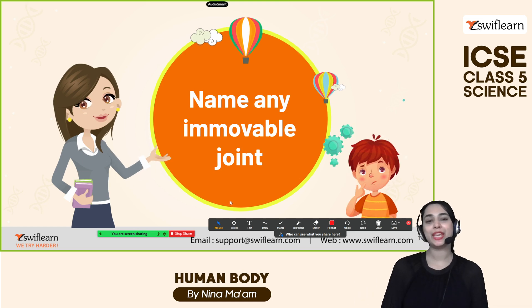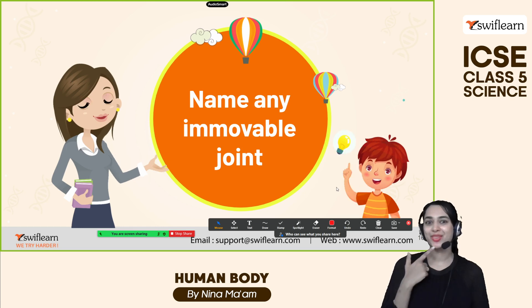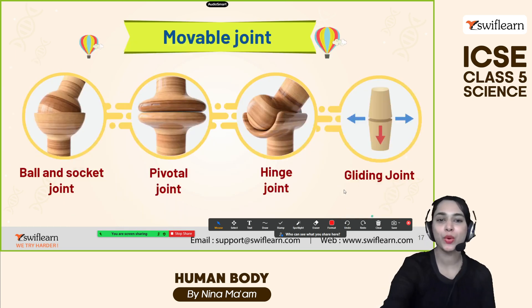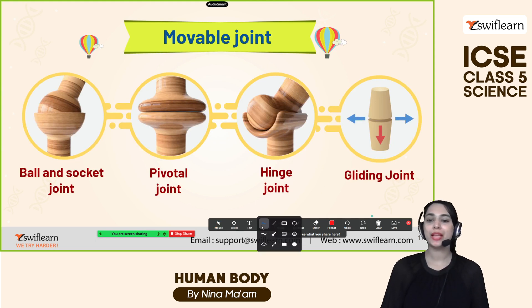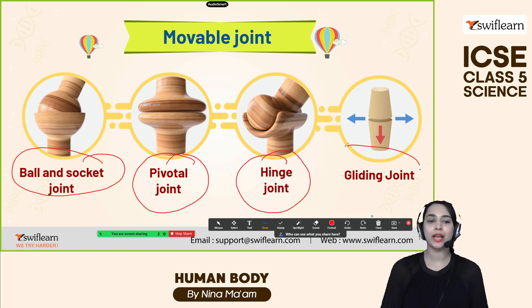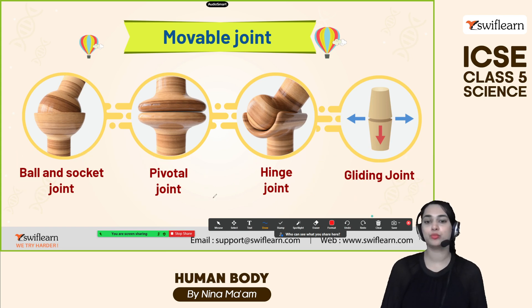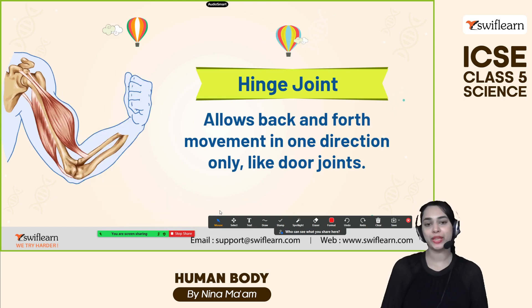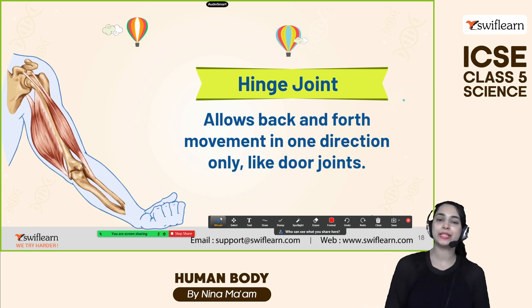Can you name any movable joint? Movable joints include the ball and socket joint, pivotal joint, hinge joint, and gliding joint — all these joints can move. The hinge joint allows back and forth movement in one direction only, just like a door. The shoulder is a bendous joint in the human body. Let's learn about some hinge joint body parts.